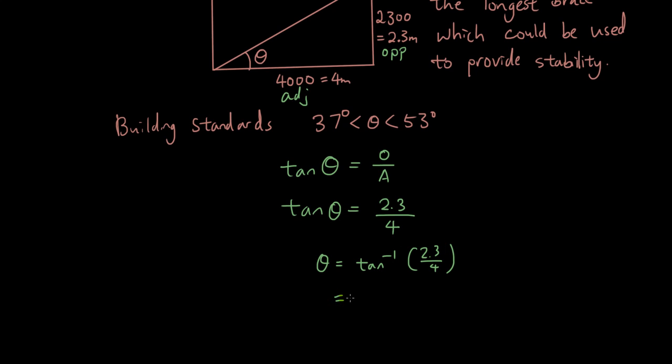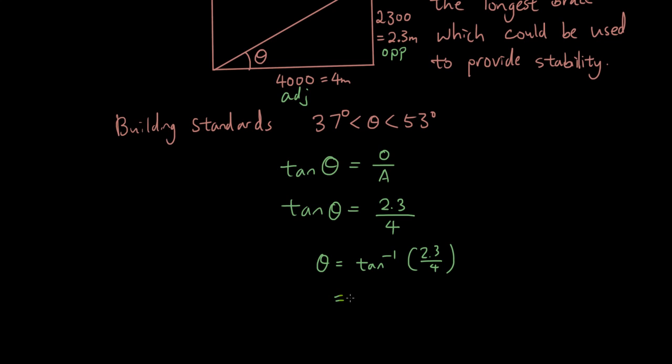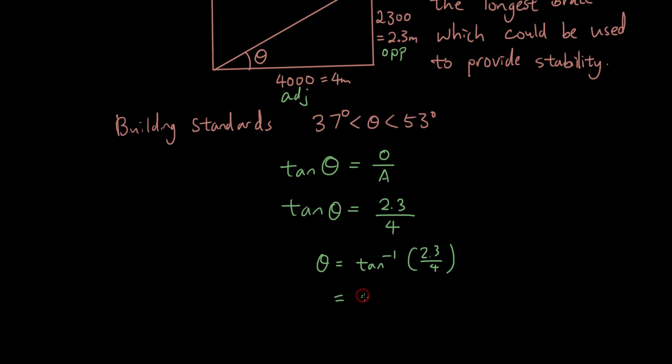Putting that into the calculator, you would put the calculator on degrees because we want the answer in degrees and we just go inverse tan bracket 2.3 over 4. Arc tan means the same thing as inverse tan if your calculator doesn't display that. If you press equals now it says 29.9 degrees bracket one decimal place.